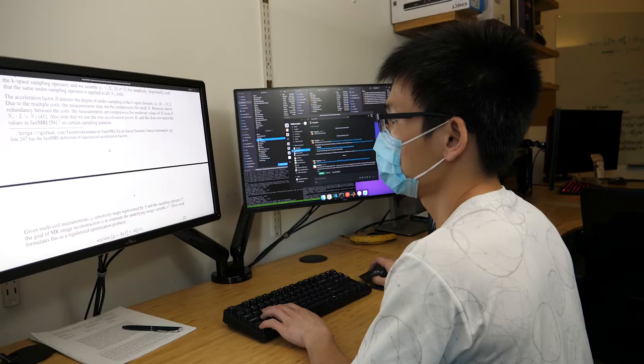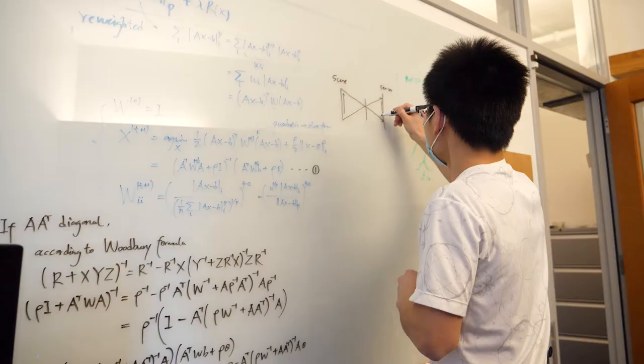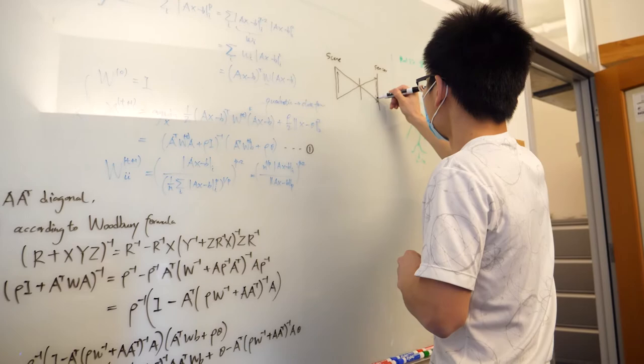My name is Yang Liu. I am a third-year PhD student working with Professor Fredo Durand, and I'm working on computational imaging and photography. One particular thing that interests me most is high-dimensional visual computing from low-dimensional sensors.